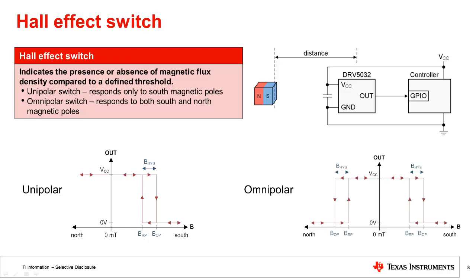Omnipolar Hall effect switches respond to both directions of flux. The main advantage of this is that it simplifies the assembly process for the magnet because north versus south does not need to be discerned.